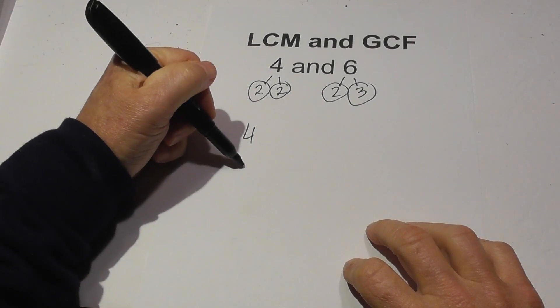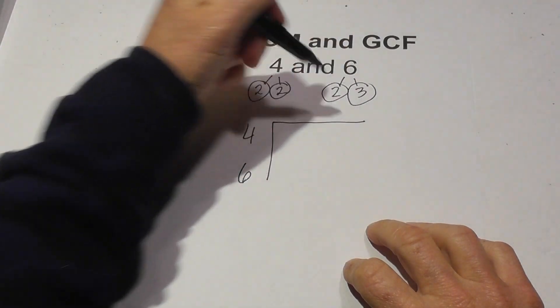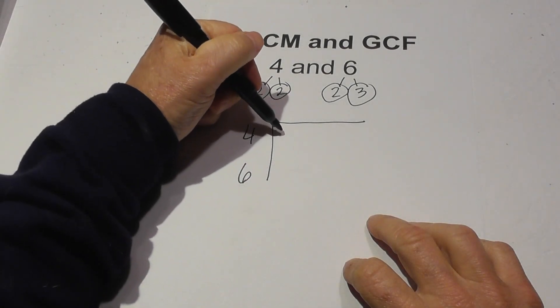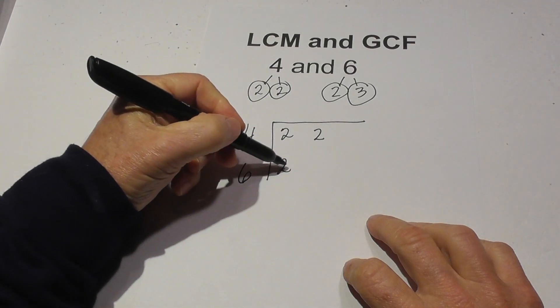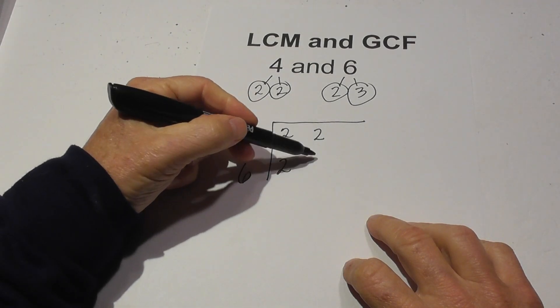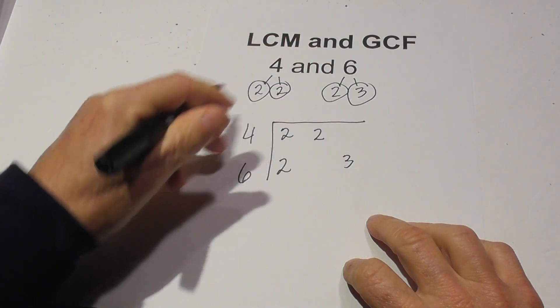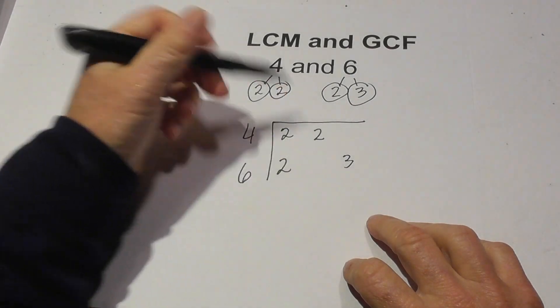Now I create a little chart and it makes life easy. I write down the prime factors for each number. Now with the six since it doesn't have a two I'm going to skip this two and place the three here because it makes nice neat columns.